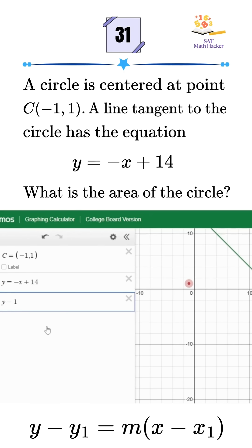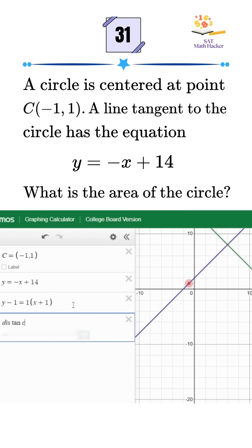Use point-slope form to get this new line. It passes through the center C and has slope 1, y minus 1 equals x plus 1. Now you have two points. The center at negative 1, 1, and the point of tangency at 6, 8. The radius is the distance between these two points.